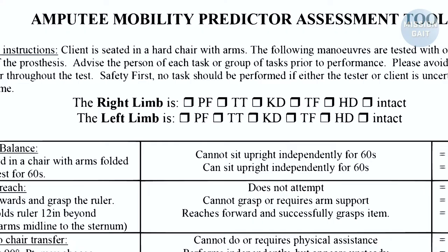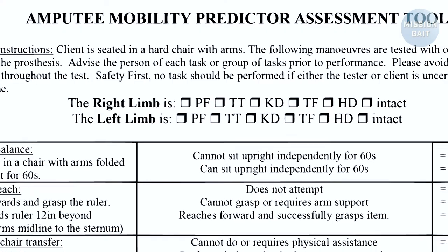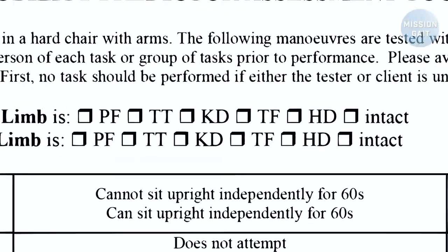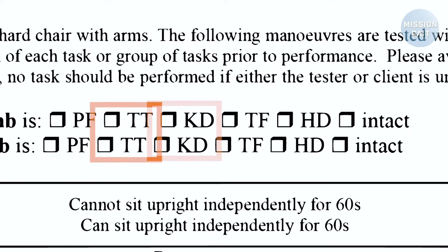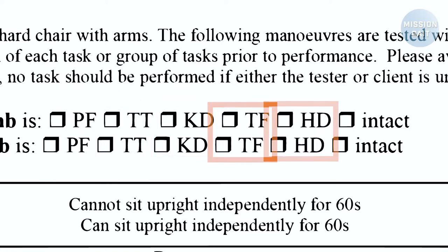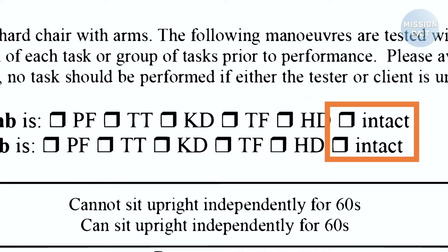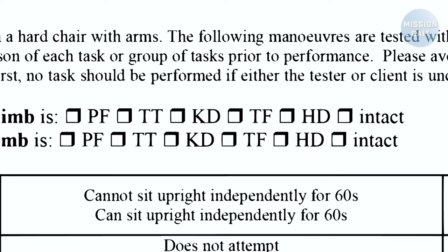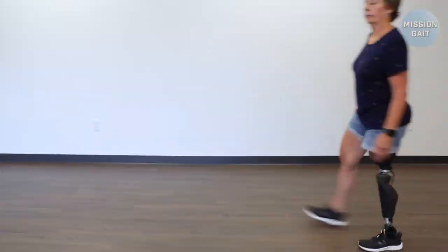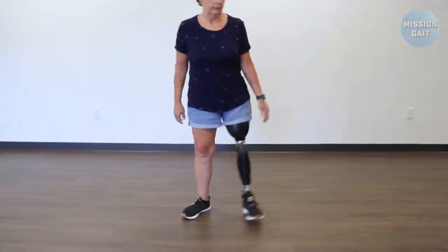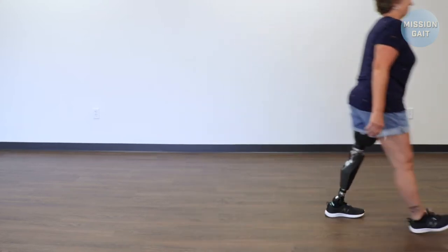At the top of the form, you will see checkboxes to denote the physical status of each lower extremity. These include partial foot, transtibial, knee disarticulation, transfemoral, hip disarticulation, and intact with no amputation. Mark the appropriate boxes for each limb. Note that each item is scored based on the initial attempt, unless otherwise noted.